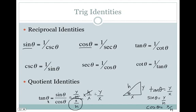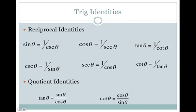Since cotangent is the reciprocal of tangent, we can rewrite cotangent as cosine divided by sine. More memorization, I know, but you need to memorize these — use flashcards, whatever works for you. We'll continue to have speed quizzes to help you commit these to memory.